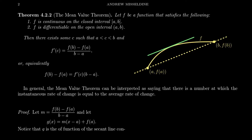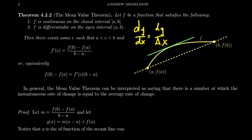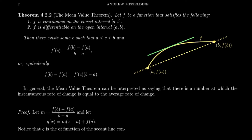If f is continuous on the closed interval a to b and differentiable on the open interval a to b, then there exists some number c that sits between a and b such that f prime of c equals f of b minus f of a over b minus a. This is telling us that dy over dx, the derivative, equals delta y over delta x — the average rate of change on the interval a to b — evaluated at x equals c.